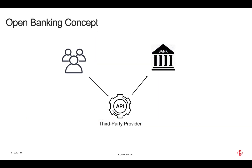At the core of the open banking concept is the Third Party Provider (TPP), which is an organization that provides financial services to end users — think money management, insurance selection, advice, and payments. The TPP interacts with the end user's bank to gather account information or make financial transactions on their behalf.